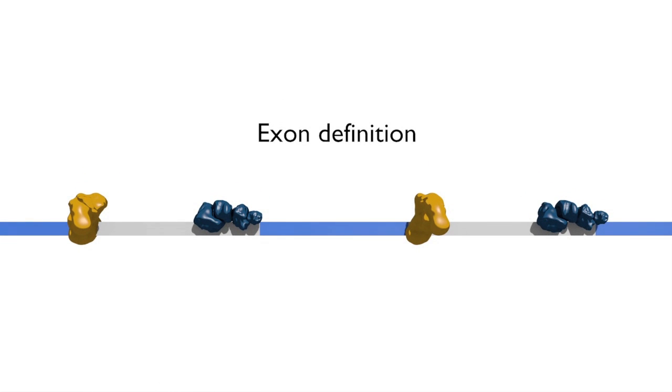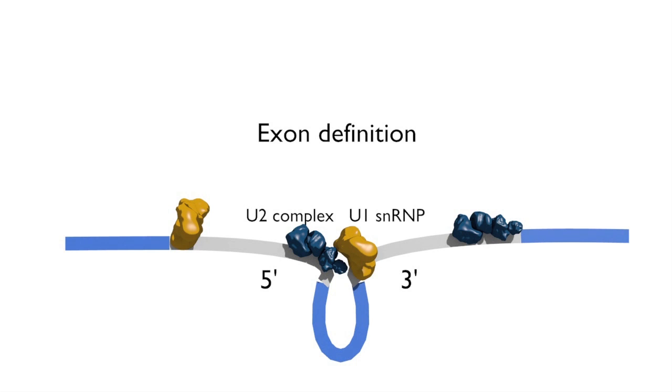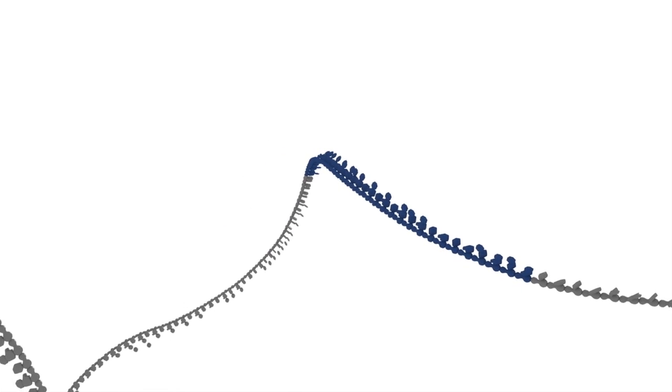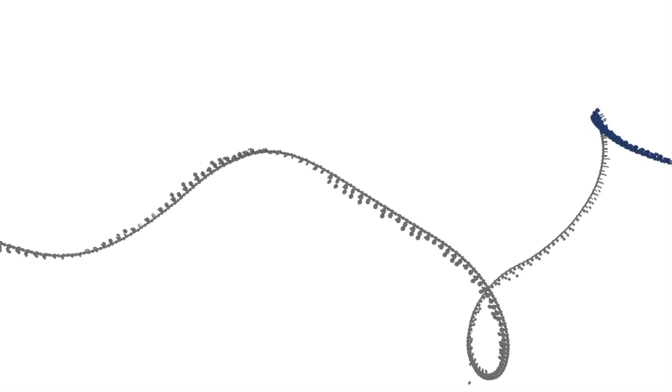According to this model, an exon is defined when the 5' and 3' ends of an exon are brought together by interactions between the U2 complex and the U1 SNRP. This explanation makes sense in higher eukaryotes, where the exons tend to be shorter and thus simpler to define.